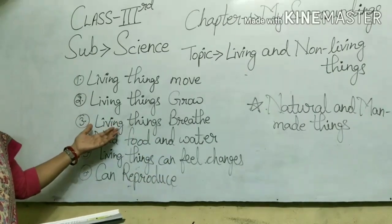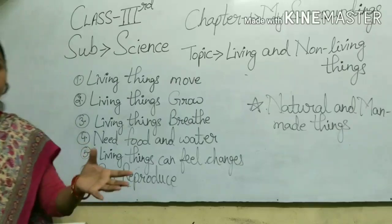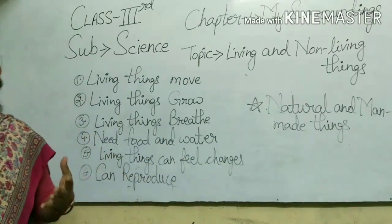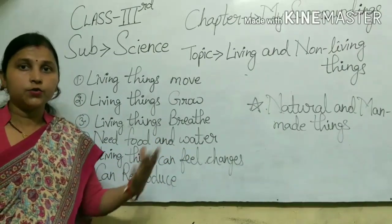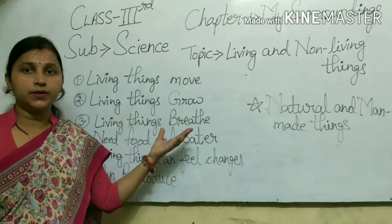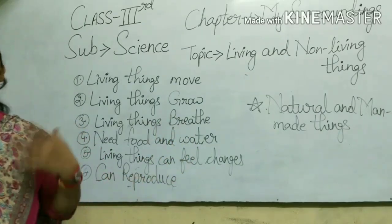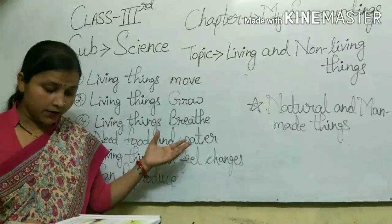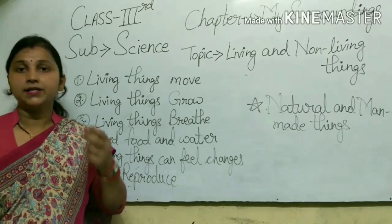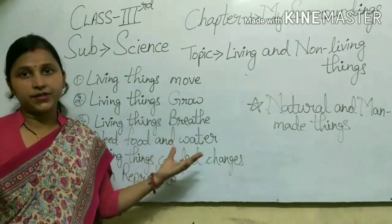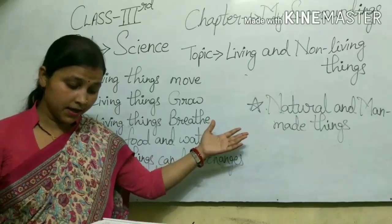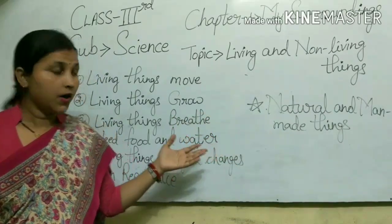Next, living things breathe. All living things need air to breathe; without breathing they cannot survive. Animals breathe through nostrils, and plants breathe through their leaves, exchanging gases. Non-living things do not breathe.